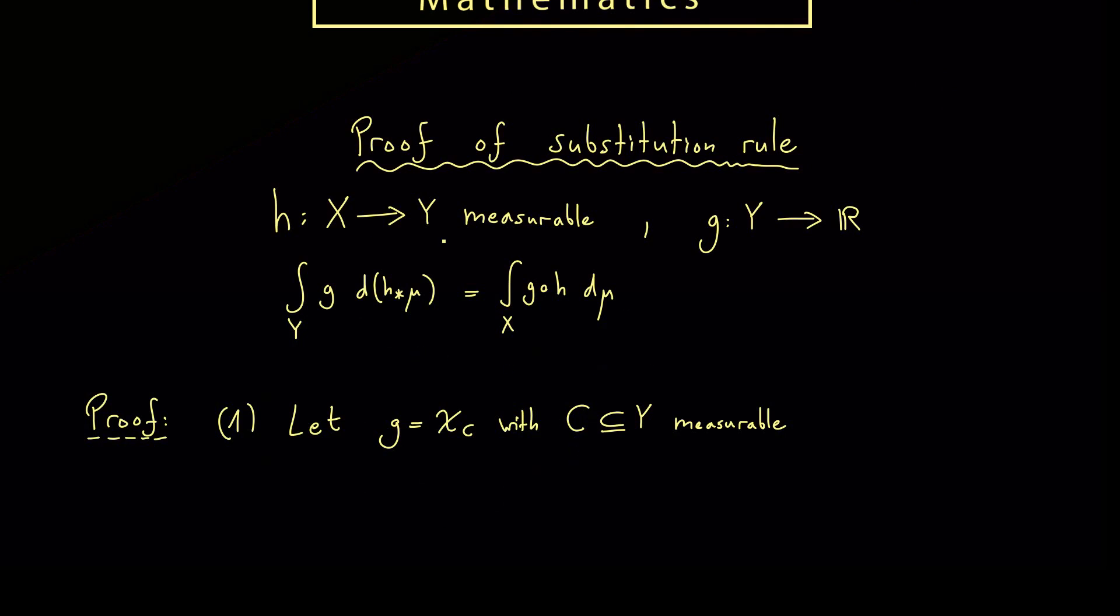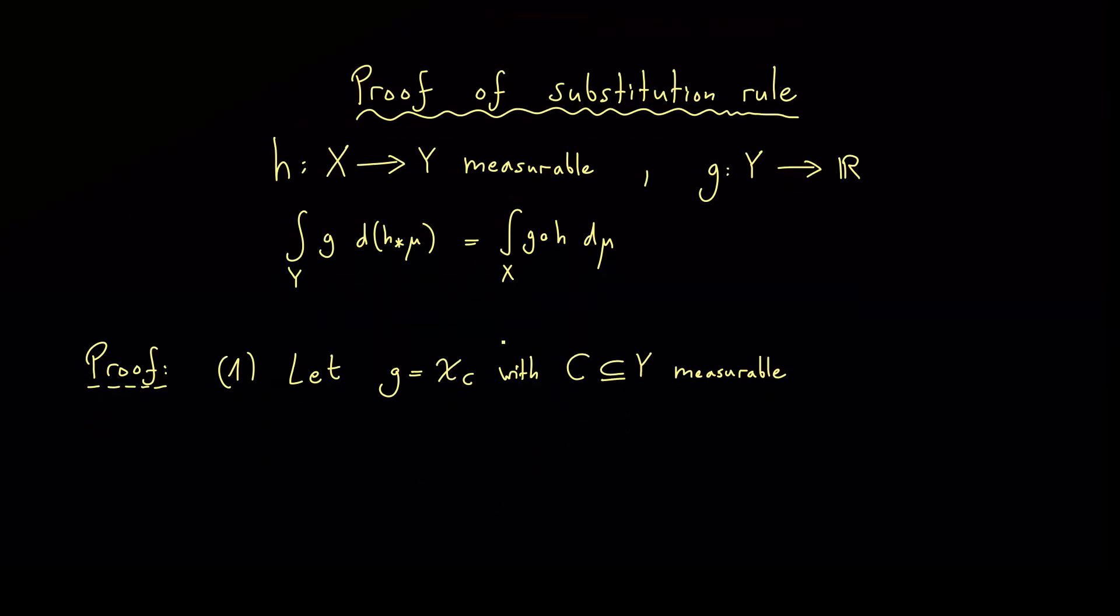And now for this easy case we can calculate both sides of our formula here. On the left hand side we have the integration of chi c over Y. However the integration of a characteristic function is always the measure of the corresponding set. And of course here we have the image measure h star mu.